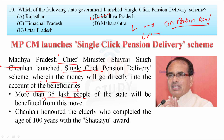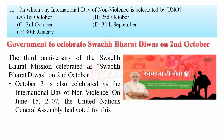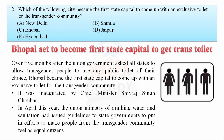On which day is the International Day of Non-Violence celebrated by the UN? 2nd October — also celebrated as Swachh Bharat Divas (the third anniversary of the Swachh Bharat Mission) — is observed as the International Day of Non-Violence because of the birth date of Mahatma Gandhi, father of the nation. The UN General Assembly voted for this on 15th June 2007. Additionally, Bhopal became the first state capital to set up an exclusive toilet for the transgender community.